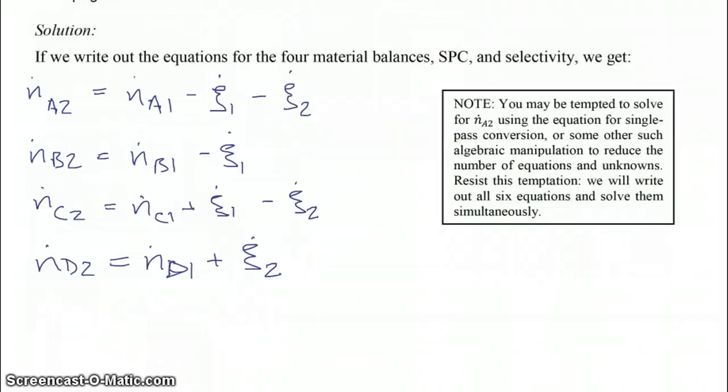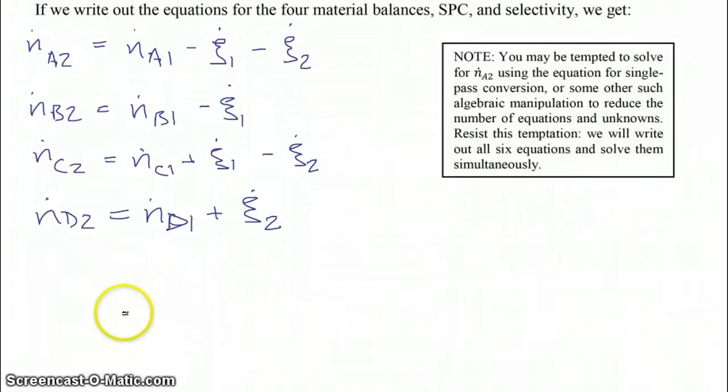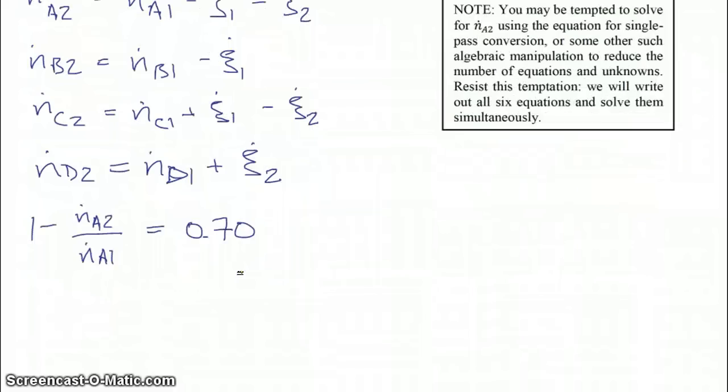And then for our single pass conversion, what we have is one minus the molar flow rate of A coming out over the molar flow rate of A coming in is equal to 0.70, because that's a 70% conversion.